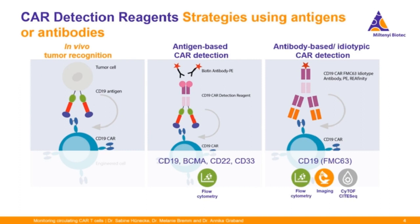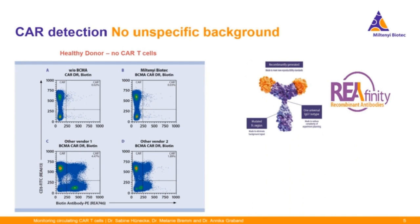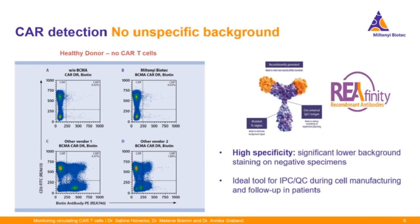We have the right solutions for antigen-based CAR detection of CD19, BCMA, CD22, and CD33 CAR detection by flow cytometry. We also have the idiotype antibody to detect FMC63-derived CD19 CAR by flow cytometry, also compatible with imaging applications and CyTOF or CyTOSEQ. In an experiment using a blood sample from a healthy donor containing no CAR T-cells, Miltenyi Biotech CAR detection reagents showed outstanding specificity and significantly lower background staining on negative specimens compared to other vendors, making them an ideal tool for IPC/QC during cell manufacturing and patient follow-up.